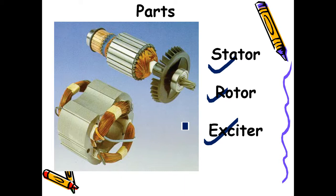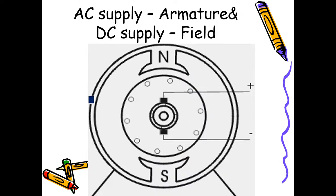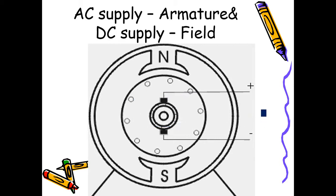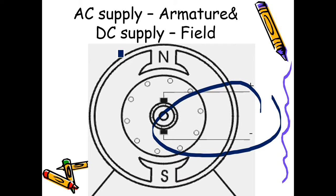Theoretically, a synchronous generator or alternator can work as a synchronous motor. The rotor will be having the field, and it is given DC supply. The rotor is the field of the synchronous motor.